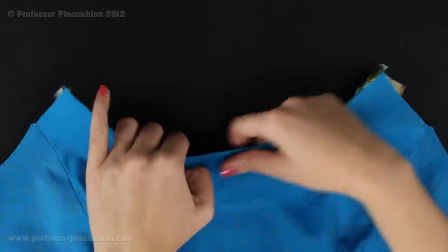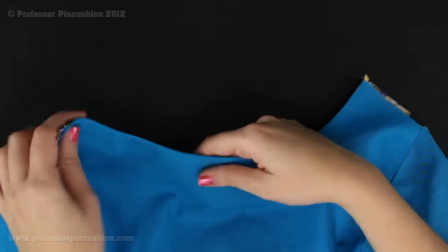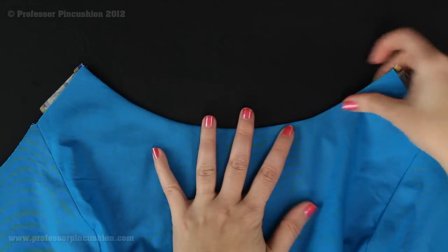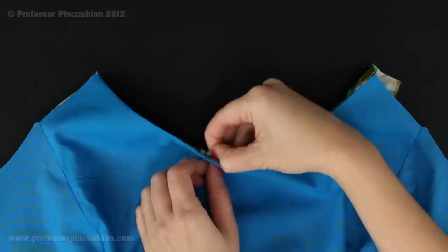What it does is it keeps that part of your garment, which is the facing in this case, on the inside of your garment. So you're not going to see it fold up or roll up on the right side.